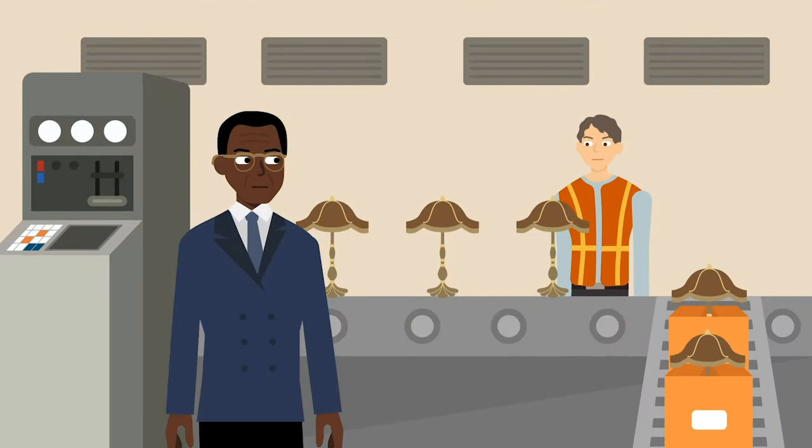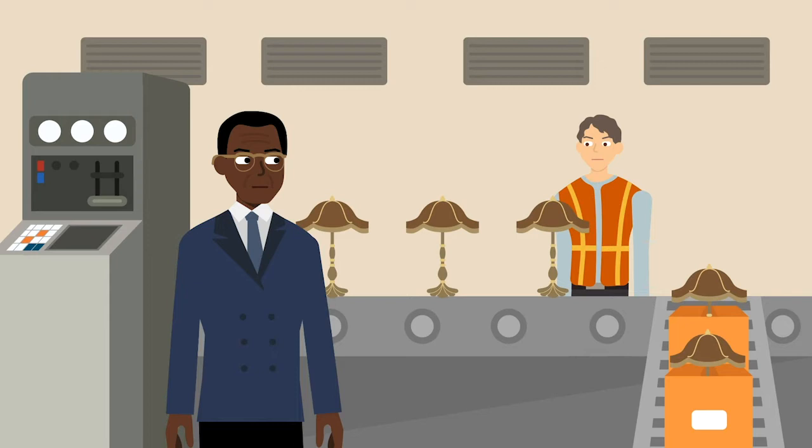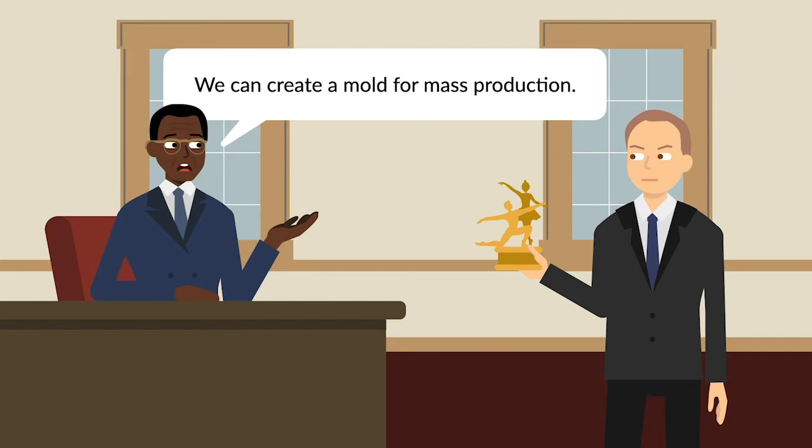Stein and his partners, whom we'll refer to collectively as Stein, operated a lamp manufacturing business. One of Stein's partners sculpted a clay figure of human dancers, which was used to create a mold for the purpose of mass production. Some of the mass-produced copies were to be sold as statuettes, but the majority were to be used as lamp bases.